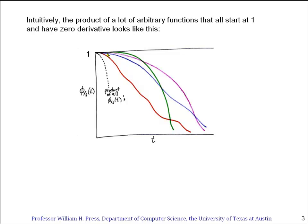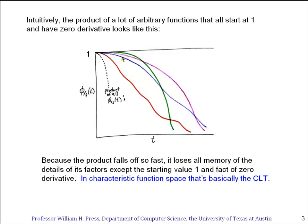The product of a bunch of ones is just one, but as soon as I get away from one, I'm taking the product of things going down. Basically, the central limit theorem says that if I take enough of these products, the product will fall so rapidly from one that I only get to see that second derivative term right near the origin. I lose all memory of the details of the actual shapes of these curves. Once I see just a parabola in this space, I know I've got a normal distribution. That's basically, in characteristic function space, the central limit theorem.